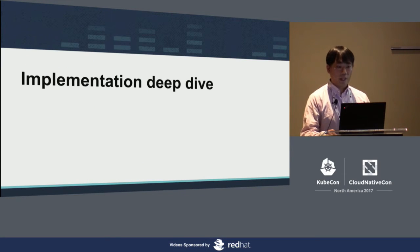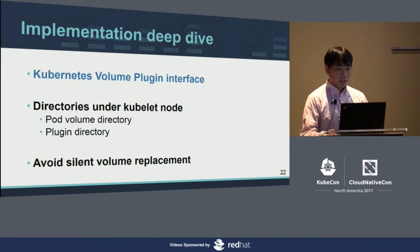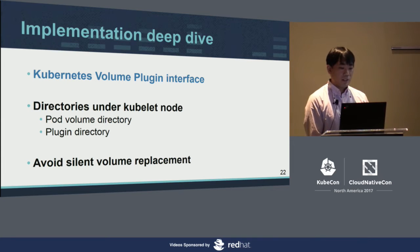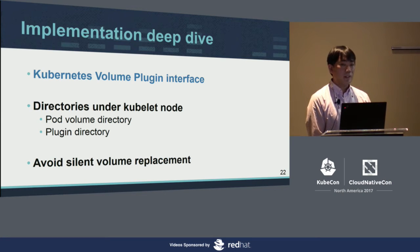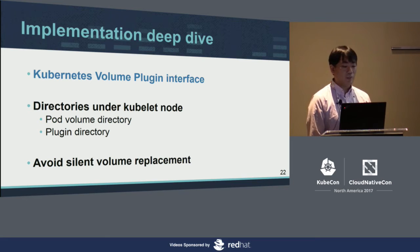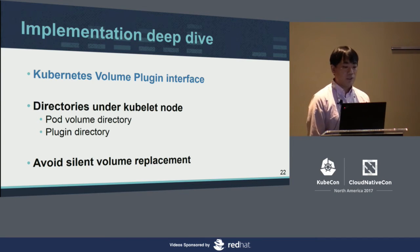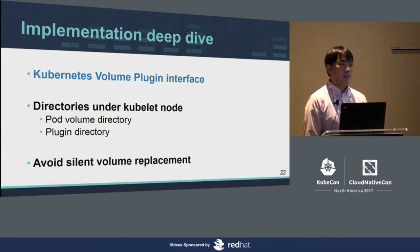Now I'd like to explain the implementation deep dive. In this chapter, I'll cover three topics. First is the Kubernetes volume plugin interface — for plugin developers, this explains the interfaces a storage plugin must implement. Second is the directories on the kubelet node — when a pod with a volume starts, two directories are created. Third is avoiding silent volume replacement — a problem we discovered during development.